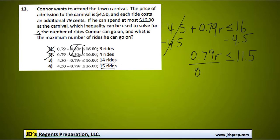And then we would divide both sides by 0.79, canceling those out. I'm going to be left with r is less than or equal to 14.55 and so on.